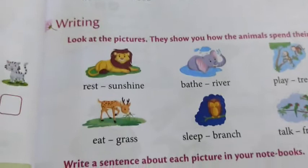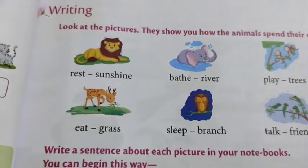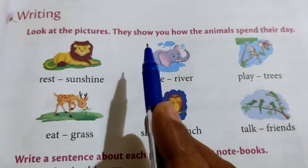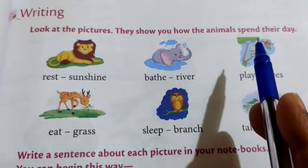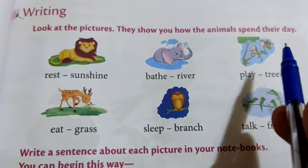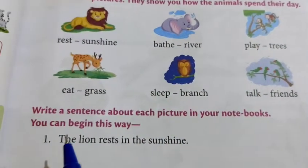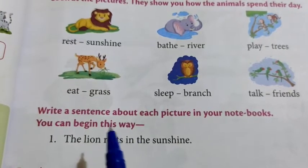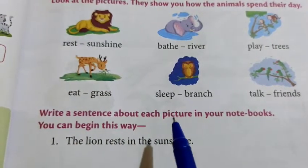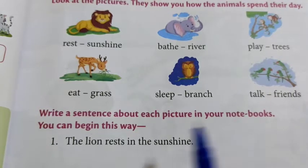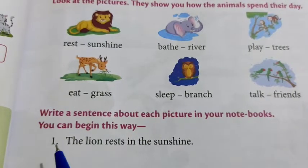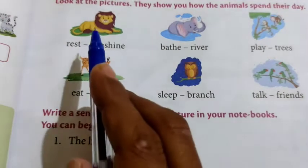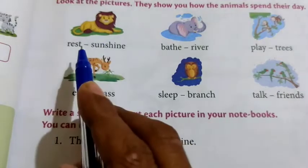Now look at the last task of this lesson — the writing part. Look at the pictures. They show you how animals spend their day. Write a sentence about each picture in your notebooks. You can begin this way — one example has been done for you.